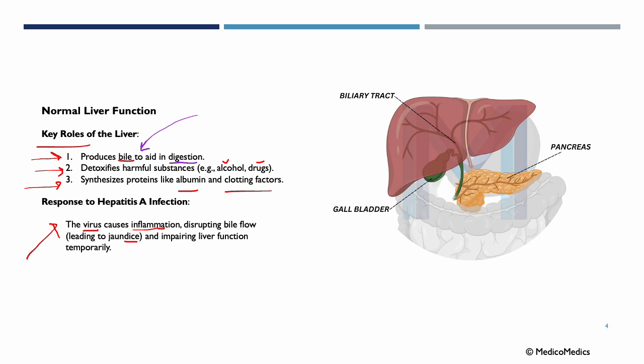In hepatitis, inflammation damages liver cells and impairs bile flow. This leads to a buildup of bilirubin in the blood, causing jaundice — a yellowing of the skin and eyes — as well as dark urine and pale stools.